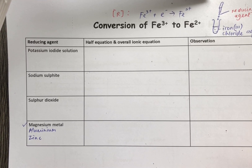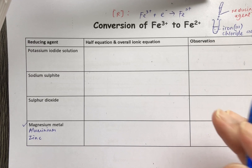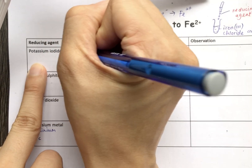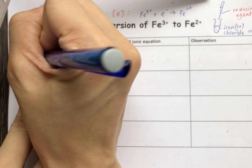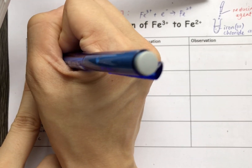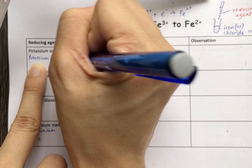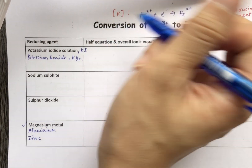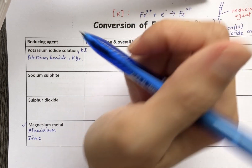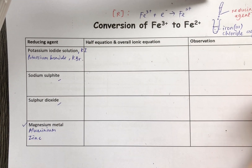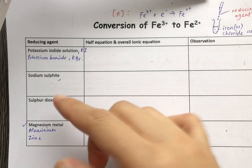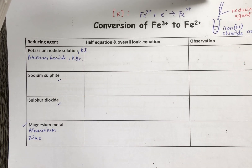Other than potassium iodide and potassium bromide, we also have sodium sulfite and sulfur dioxide — they also act as reducing agents. Now we are going to learn how to write the half equation for each of these reducing agents. In the first example, when I want to convert Fe3+ to Fe2+, if the substance I add is magnesium metal, then how do I write the half equation for magnesium metal?